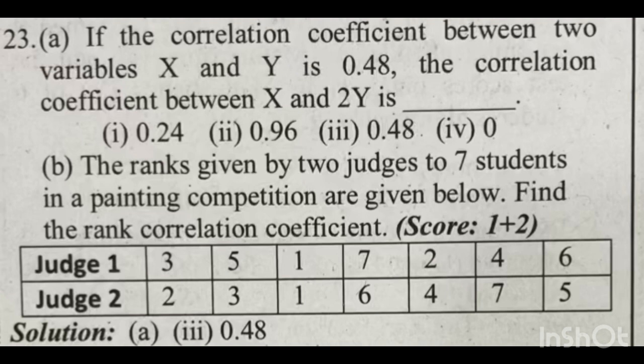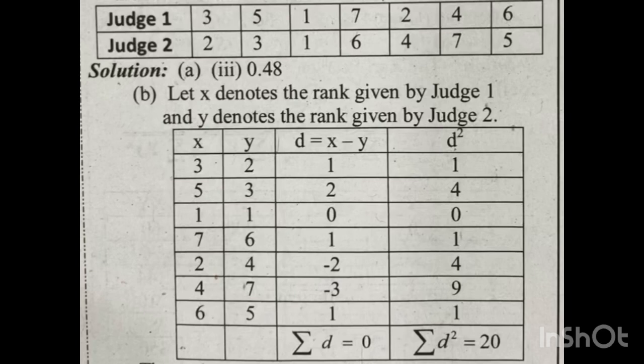The rank correlation coefficient has one symbol: rho (ρ). The equation is: rho equals 1 minus 6 times sigma d-squared divided by n-cubed minus n. Let x denote the ranks given by Judge 1: 3, 5, 1, 7, 2, 4, 6. Let y denote the ranks given by Judge 2.